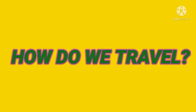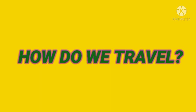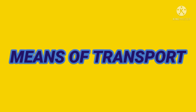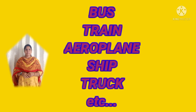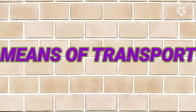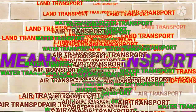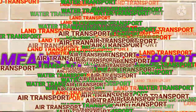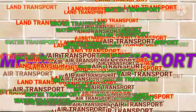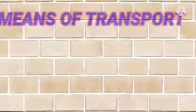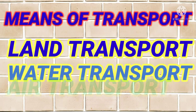Children, how do we travel? We travel by bus, car, jeep, or aeroplane. The means of transportation are bus, train, aeroplane, ship, truck, etc. Children, let us learn about means of transport in detail. Means of transport can carry people, animals, and goods from one location to another. There are three types of transport: land transport, water transport, and air transport. The kind of transport we choose will depend on the distance to be travelled.